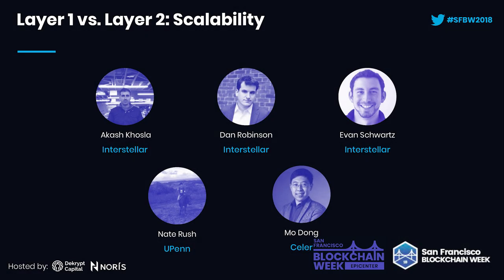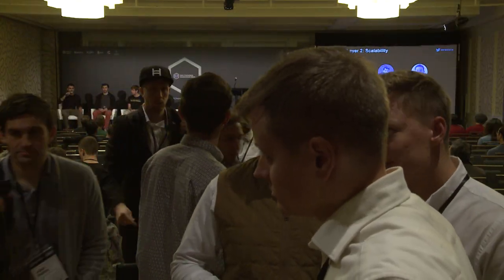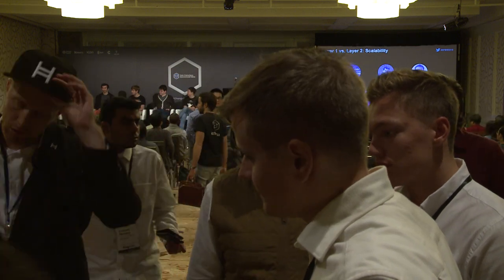My name is Akash. I am a UC Berkeley student still finishing up my last year. I used to work at Interstellar and now I'm working on some Interledger research. I have my very talented panelists here. We have Evan from Interledger and Ripple, Nate Rush who is an undergrad at UPenn and did research at Ethereum, Dan Robinson from Chain which is now Interstellar, and Mo Dong from Celer.